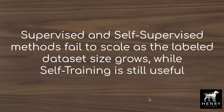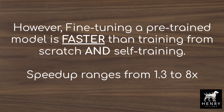Key takeaways: supervised and self-supervised pre-training fail to scale as labeled dataset size grows — going from 20% to 40% to 100% of the dataset does not improve performance, and increasing data augmentation strength does not help either. Self-training remains useful in these settings. However, fine-tuning a pre-trained model is still faster than self-training from scratch, with speedups ranging from 1.3× to 8× faster.